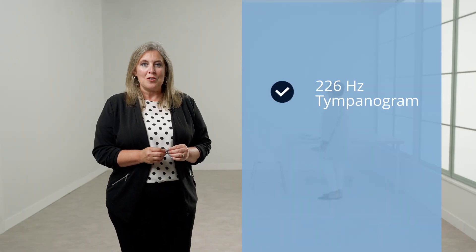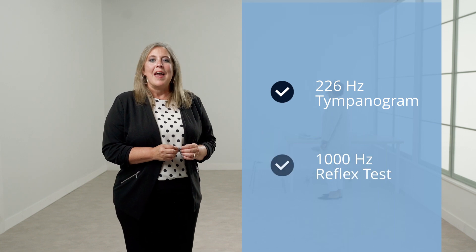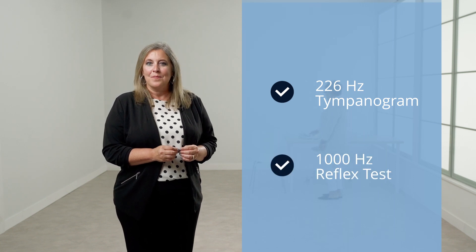The Allegro has a default protocol that includes a 226 Hz tympanogram and a 1000 Hz reflex test. It is possible to change the protocol by entering the configuration menu and following the on-screen instructions to make selections. Follow your facility's guidelines for screening procedures.